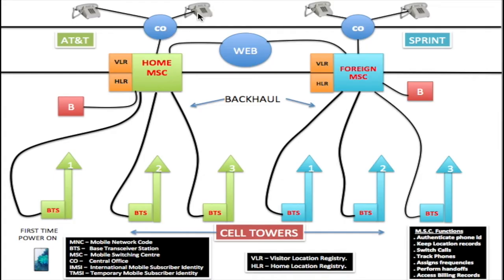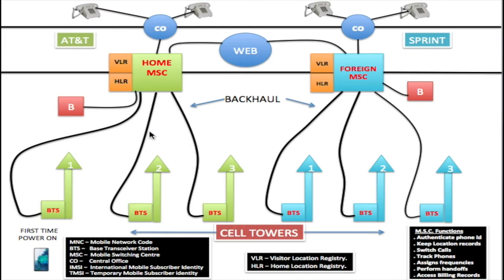So if landlines want to call cell phones, there's a trunk cable going from the landline switch to the cell phone switch. All MSCs are connected together. For example, if you got your service from AT&T, AT&T would be your home MSC and Sprint would be a foreign MSC. So if you are in the Sprint area using your cell phone, you would be roaming. If you are a customer of Sprint, Sprint becomes your home MSC, and if you go into the AT&T network, you will be roaming on the AT&T network.